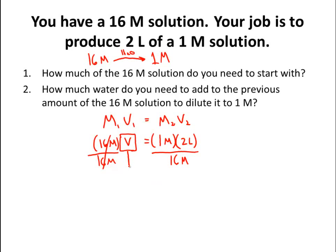It turns out the volume is going to be very small that we need. When I do 1 times 2 divided by 16, I end up needing 0.125 liters. That's like saying I need 125 milliliters of this concentrated solution. So it might be easier for us to just express that as 125 mLs.